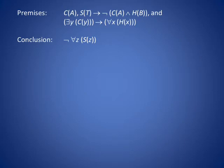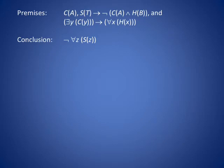Let's begin by looking at the conclusion. The conclusion says the negation of for all z, s of z. To simplify our consideration of a proof, let's begin by ignoring all of the quantifications. The conclusion asks us to show s is false, and the second premise would give us s is false if we were able to show c of a and h of b were true. Well, c of a is true from the first premise, and h is the consequence of the implication in the third premise. So it appears that the strategy should be using c of a to gain h, and then forming a conjunction of c of a and h to obtain not s of t.